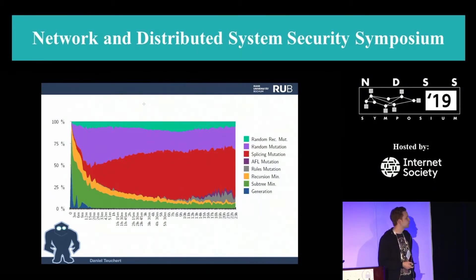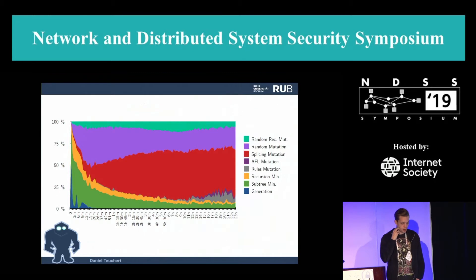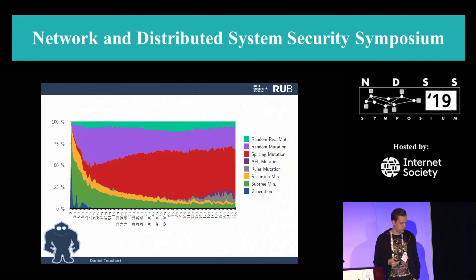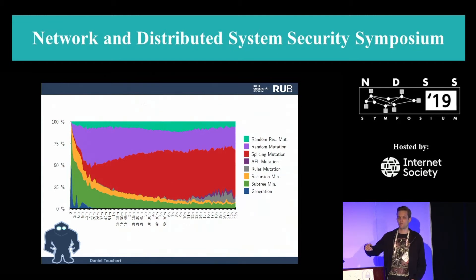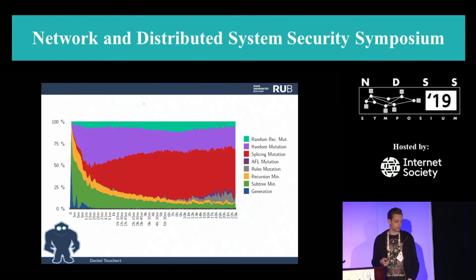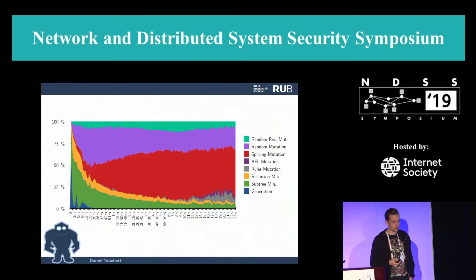We also looked at how efficient different mutators are at finding new coverage over time. The time axis is pseudo-logarithmic because toward the end of a campaign you need much more time for a noise-free sample. Interestingly, in the beginning, generation and minimization are the techniques that find most inputs, but as fuzzing continues, splicing becomes more and more important.